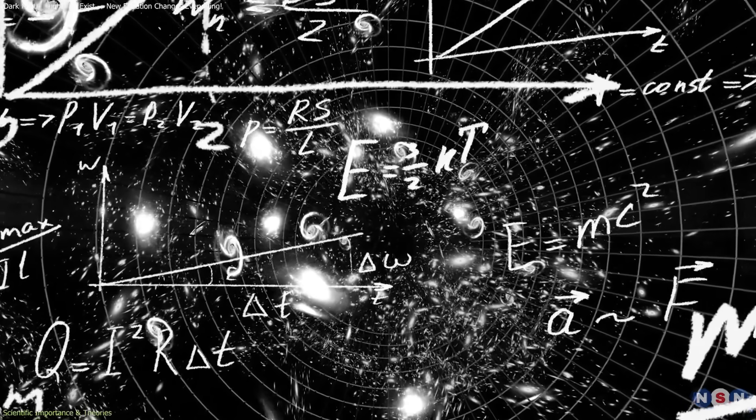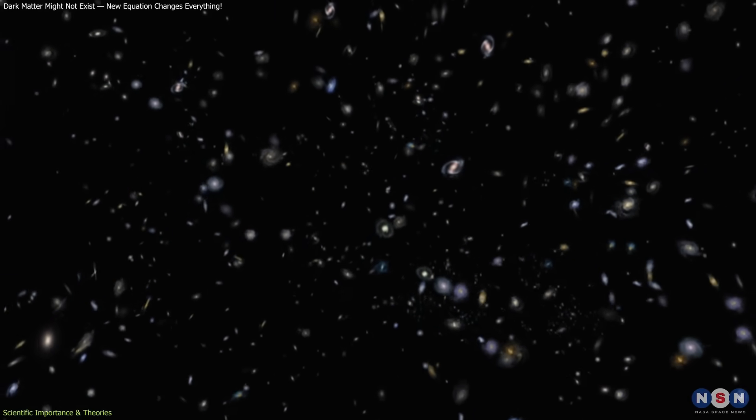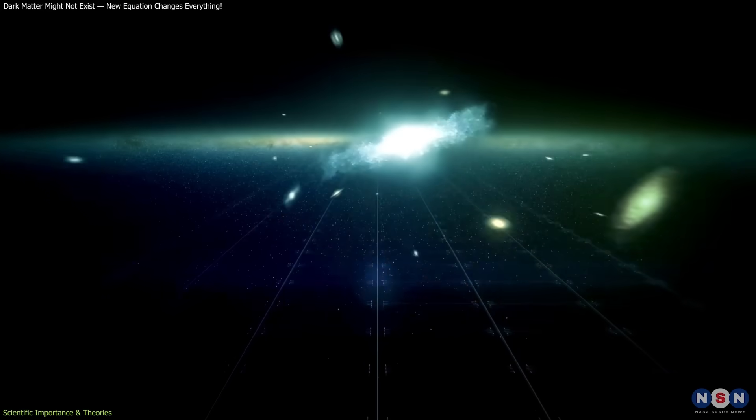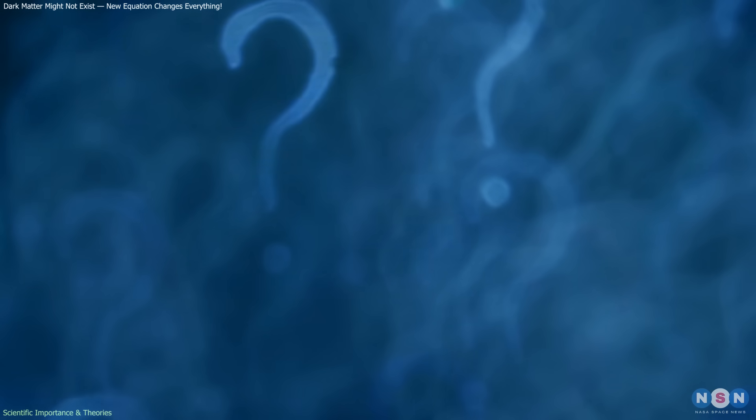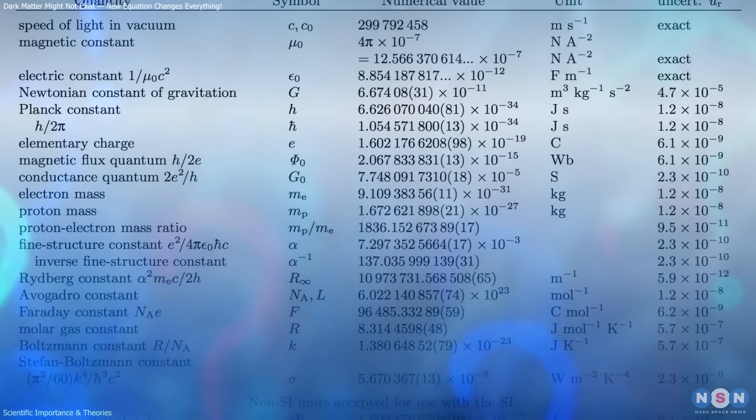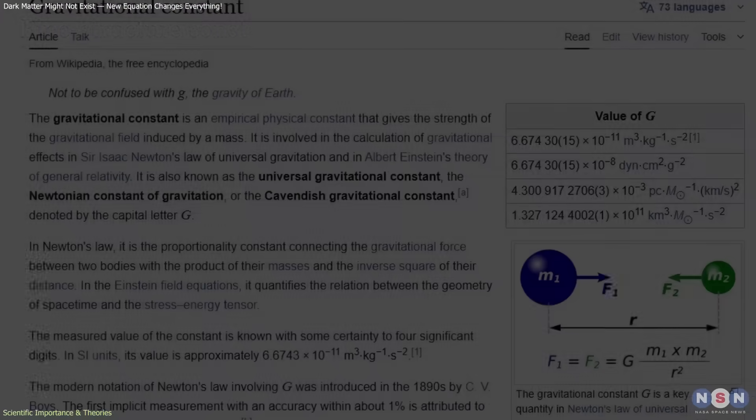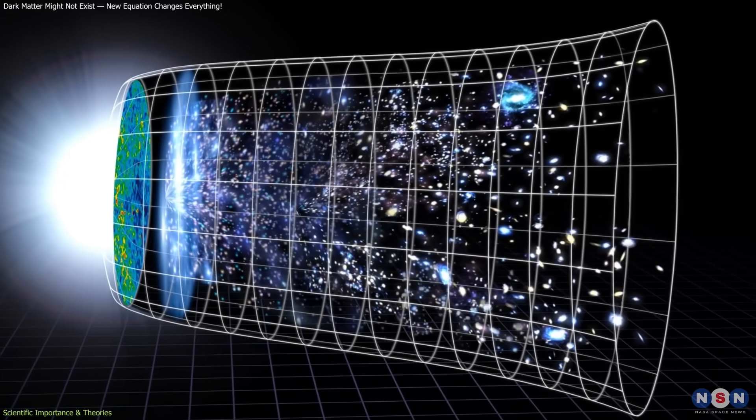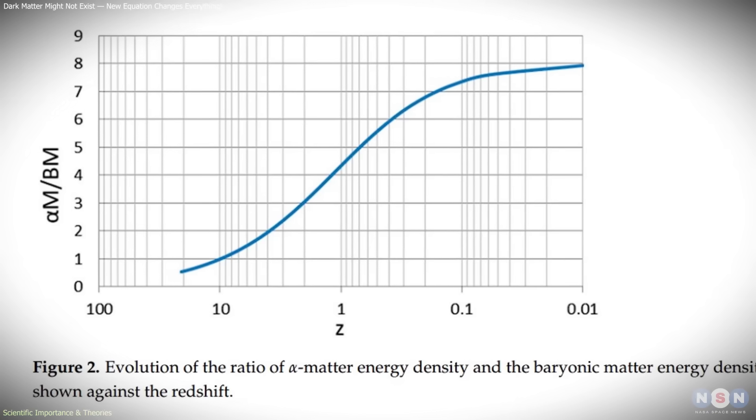In this view, the universe isn't static in its rules. It's a living system, whose governing parameters slowly shift as it expands. This approach could explain both local and cosmic scale behavior without assuming any exotic forms of matter or energy. This theoretical shift also aligns with a growing question in physics: are the constants of nature truly constant? Some cosmologists have speculated that quantities like the fine structure constant or gravitational constant might vary ever so slightly across cosmic history. Observations so far haven't confirmed this, but Gupta's model provides a structured way to explore it.